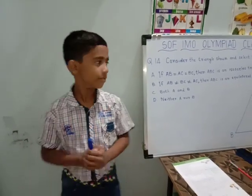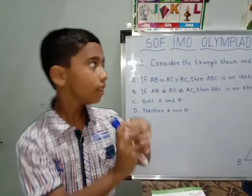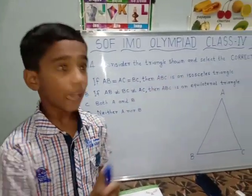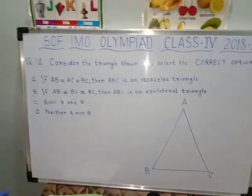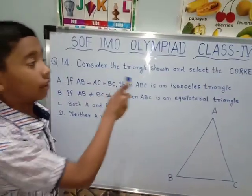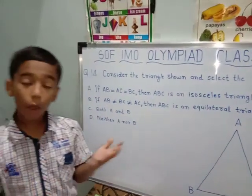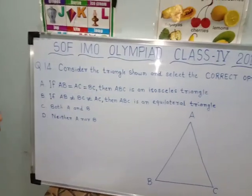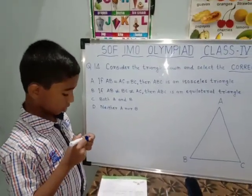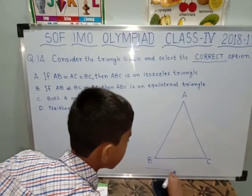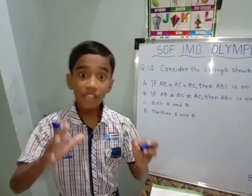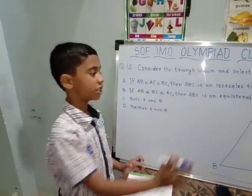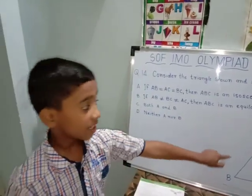Next question: consider the triangle shown and select the correct option. Don't forget — it is asking for what is correct, not incorrect.